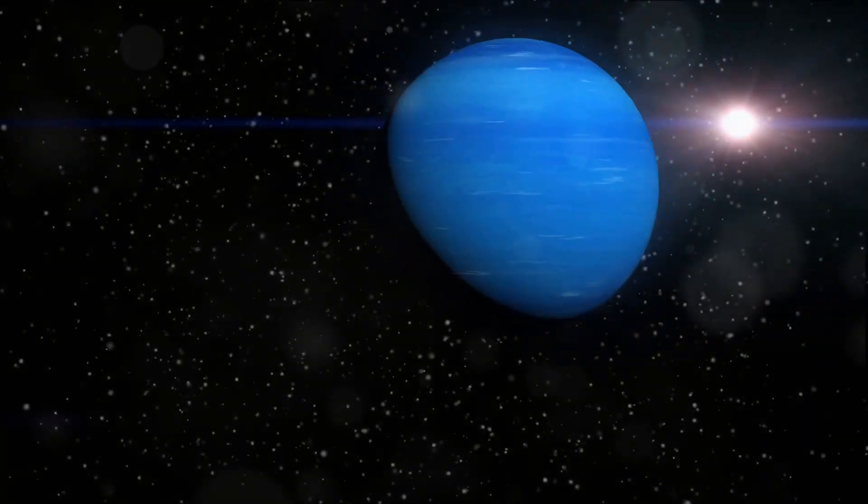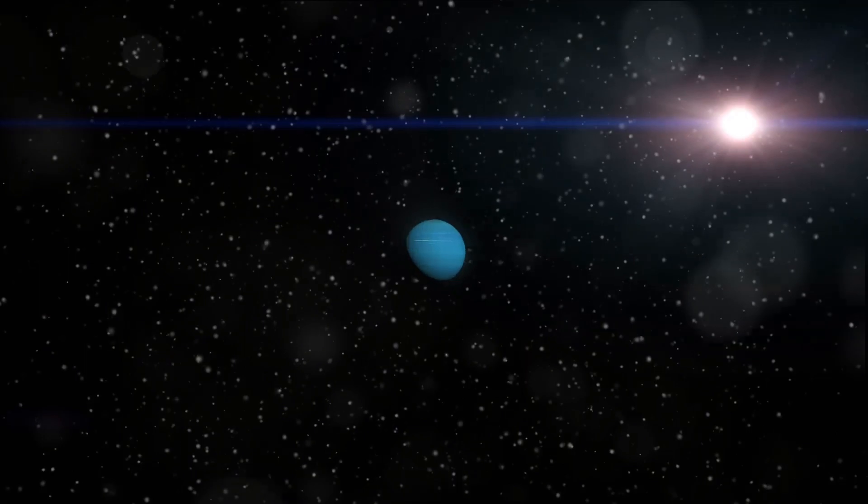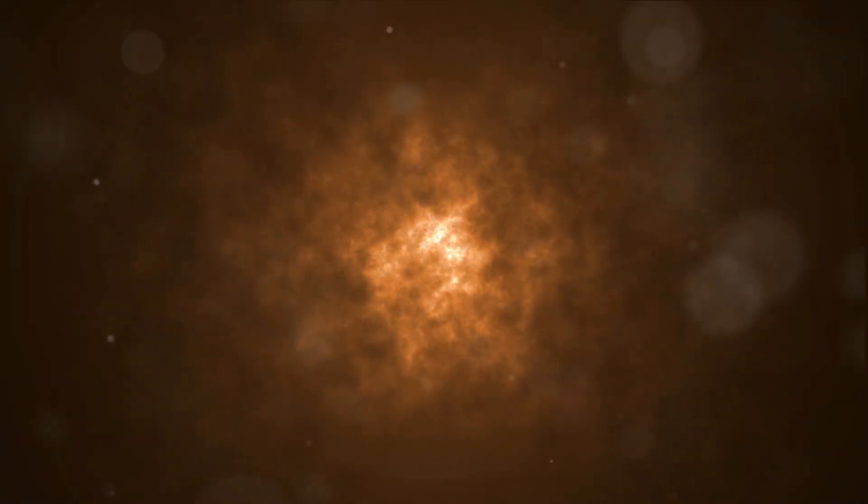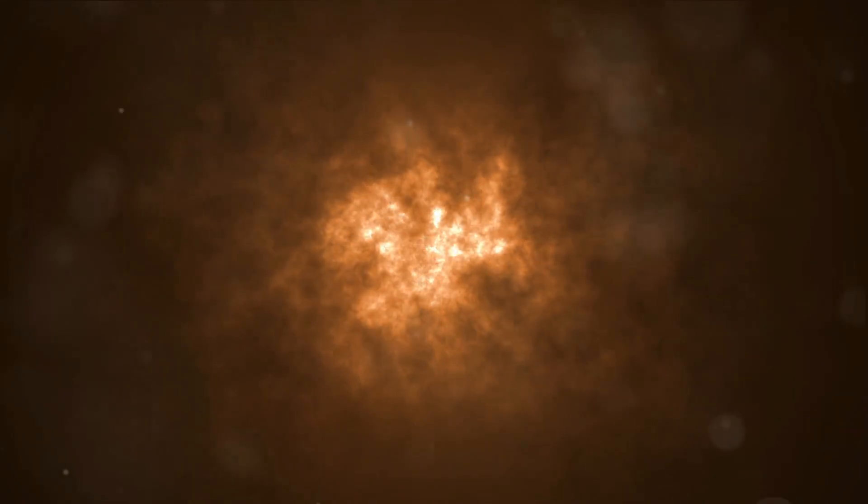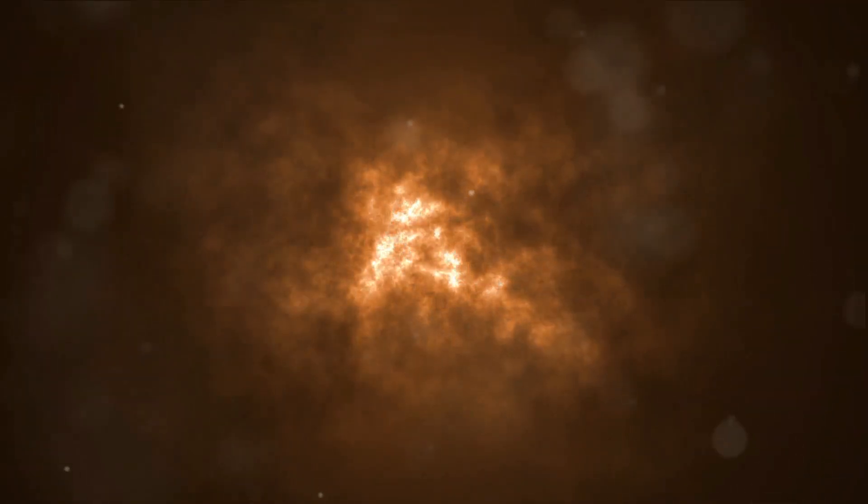The Sun's journey from birth to death is a testament to the life cycles that govern the universe. It's a cosmic ballet, a dance of energy and matter, choreographed by the laws of physics. From gas and dust, a star is born. It lives, changes and eventually dies, only to give birth to something new.